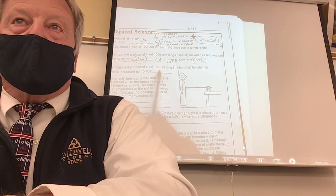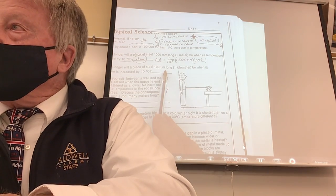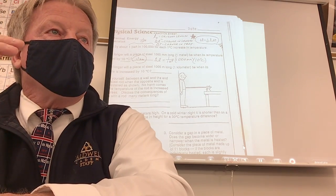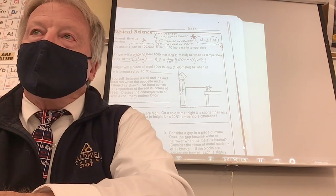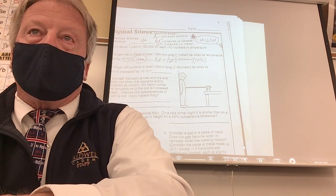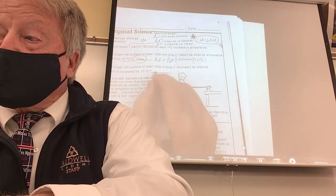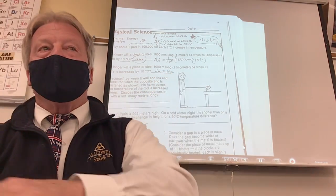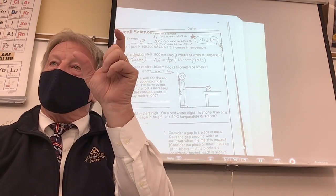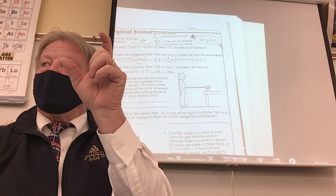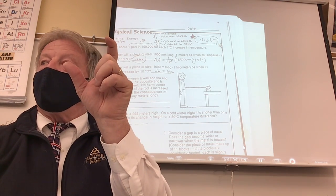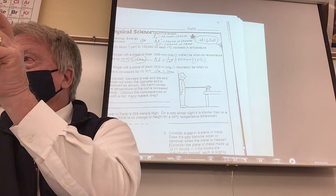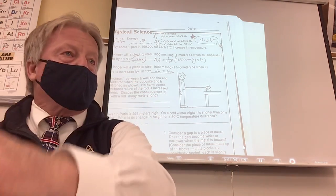What about a 1,000-meter piece of steel — a kilometer, about half a mile? You'll still get 0.1, but 0.1 what? About 10 centimeters. So if you're an engineer building a bridge more than a kilometer long, you'd better be ready because your bridge is going to get that much longer when it heats up. If you didn't allow places for expansion, it's going to buckle.